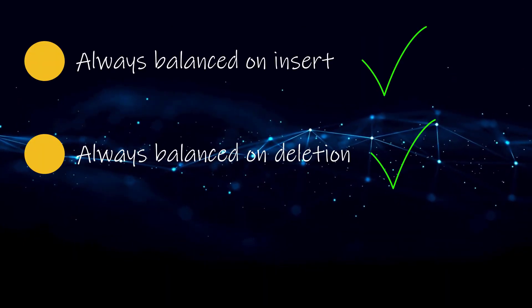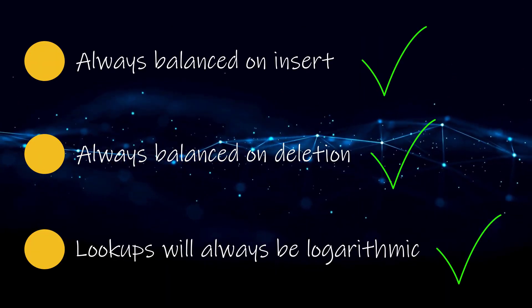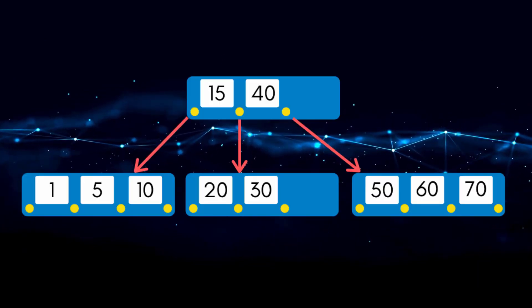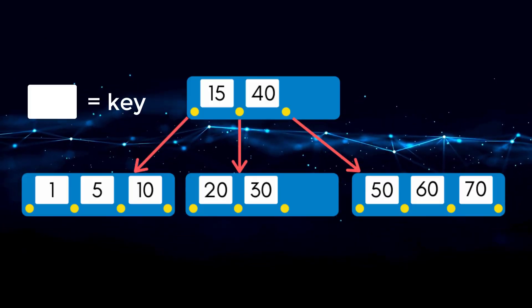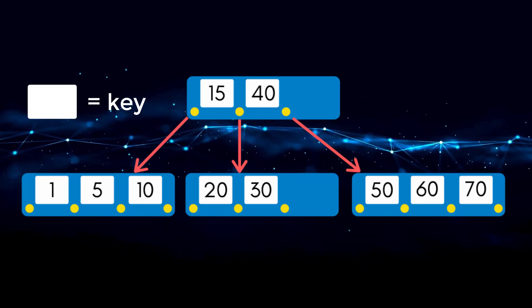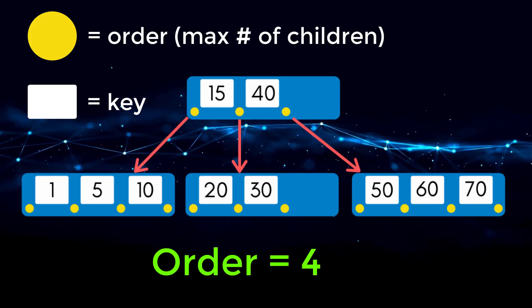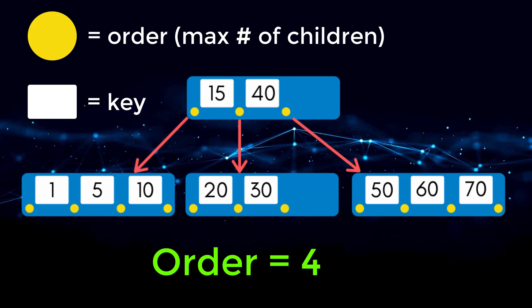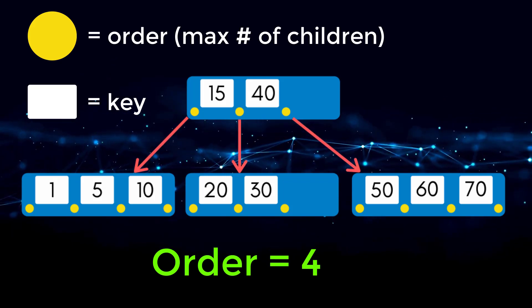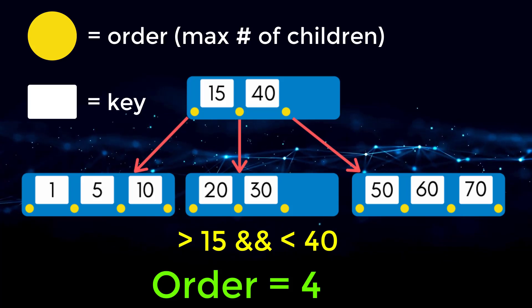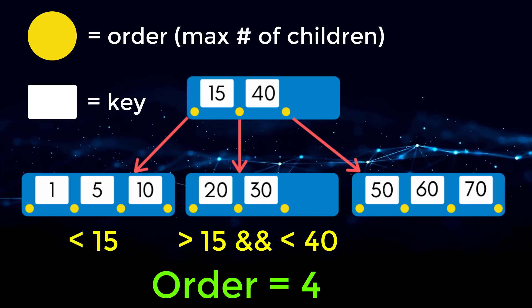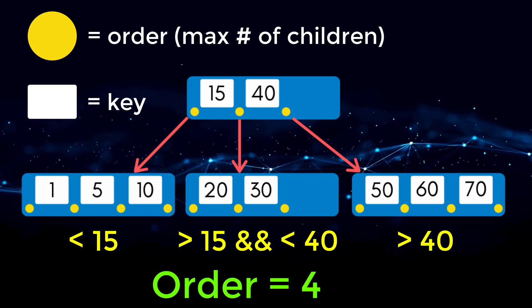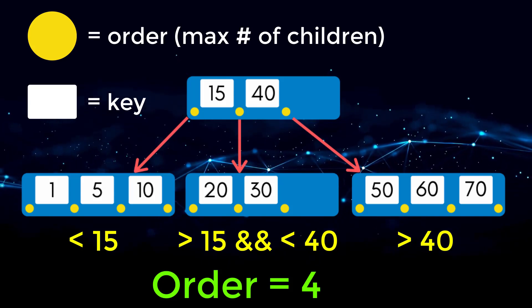Each node inside of a B tree contains keys, and keys are just the data that's represented inside of the nodes. The order of a B tree is the number of children that each node can have at maximum. So for every key inside of a node, we can have further nodes as our children, and that is if they are greater than the key on the left and less than the key on the right.